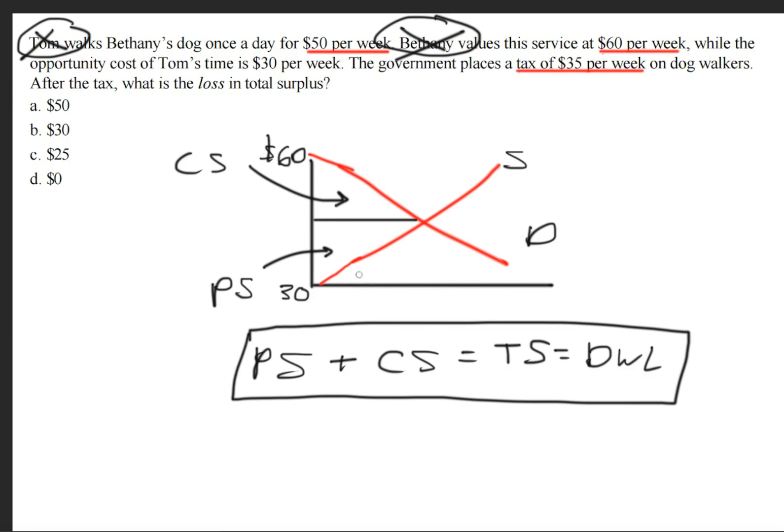So we get that the producer surplus plus the consumer surplus will give us the total surplus. And because these two are out of the market, because the tax is too much for them, so they leave, this is also the deadweight loss. Because it's the deadweight loss, this is what is known as the loss in total surplus.